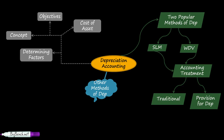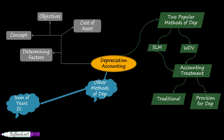Now we are going to learn other methods of depreciation apart from SLM and WDV. These methods will help you to calculate the amount of depreciation similarly to how we calculate in SLM and WDV, but with some different methods of calculation. The first method of depreciation is the Sum of Years Digit method.